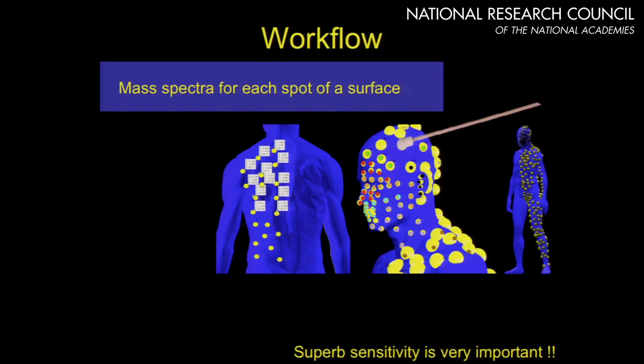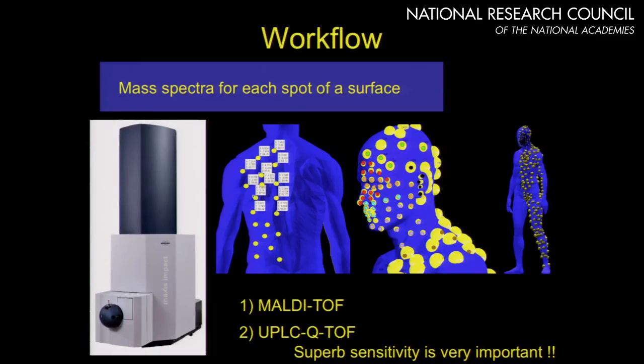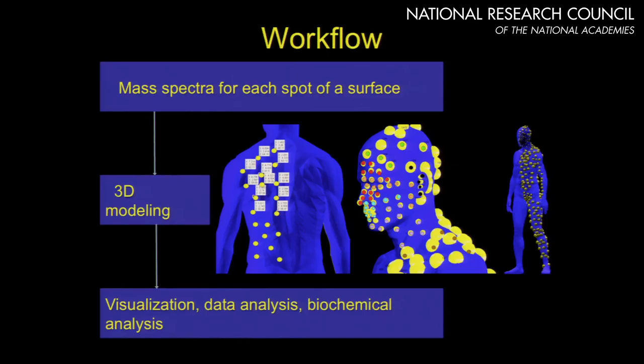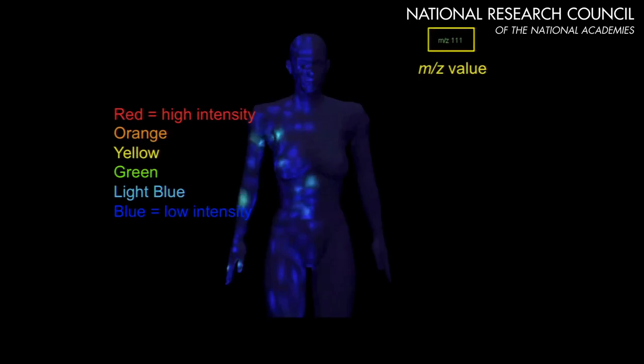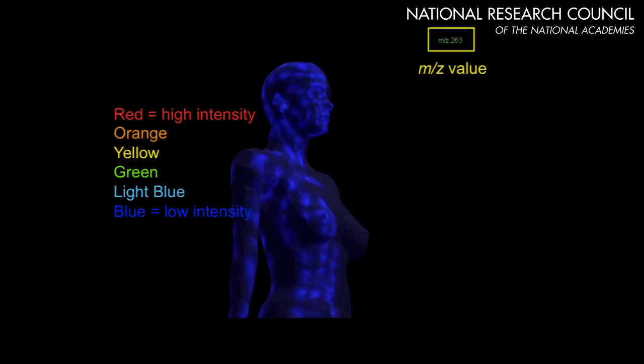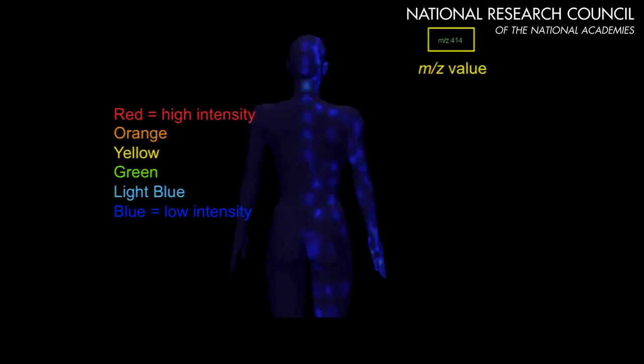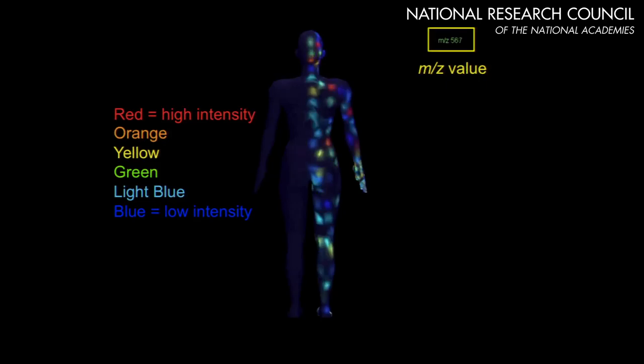We took swabs of an individual — but this could also be a population study with zip codes on Google Maps. We did MALDI-TOF and UPLC-Q-TOF analysis, then translated the intensity of the MALDI-TOF data back onto the maps and the area under the curve back onto the maps. Then we do three-dimensional modeling, data analysis, and biochemical analysis to validate the hypotheses we can generate with these datasets.